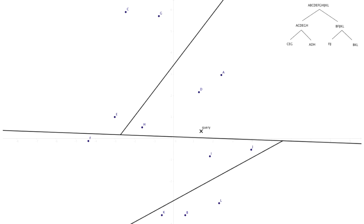When answering a nearest neighbor query, we only consider the data points in the same leaf as the query point. Here, the query point falls into the same leaf with data points A, D, and H, and the algorithm returns D, which is the closest of them. The true nearest neighbor, I, resides in another leaf, so the algorithm fails to find it.